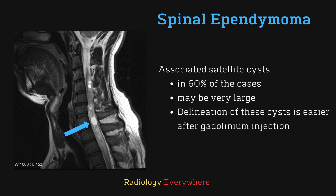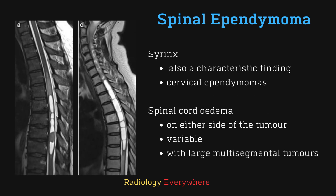You can see associated satellite cysts in 60% of cases, and these can be very large. Delineation of these cysts is easier after gadolinium injection. You can see syrinx as a characteristic finding, especially on cervical ependymoma, and you can see spinal cord edema, which can be variable and is seen in large multi-segmental tumors.